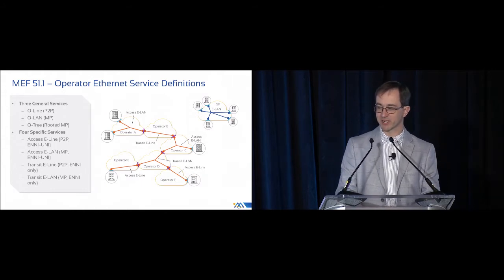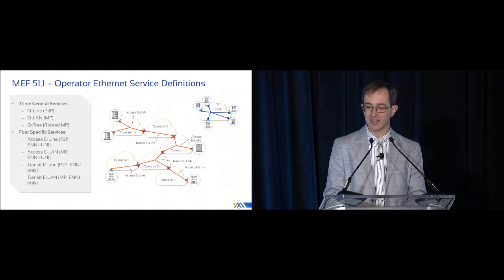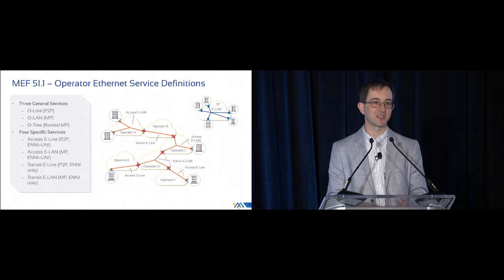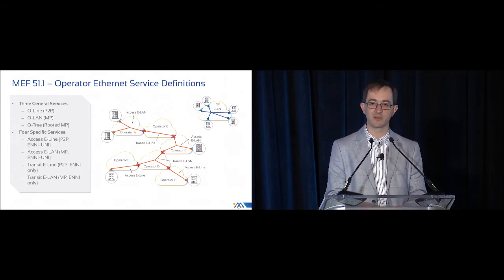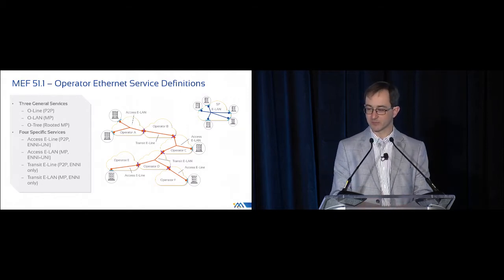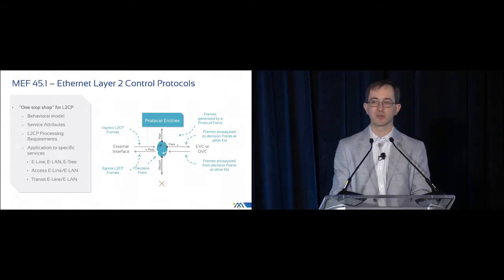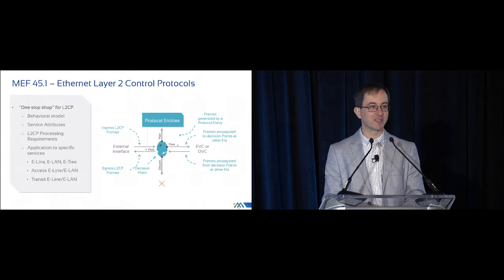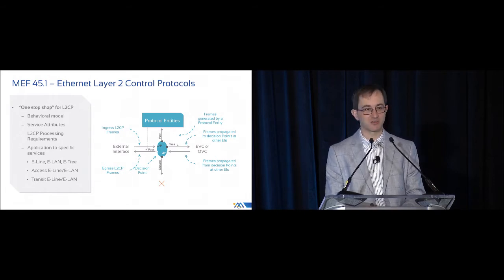The operator Ethernet service definition looks like a complicated figure, but essentially it's the same as the subscriber case. There are three types — O-line, O-lan, and O-tree — and four specific ones: access E-lan, access E-line connecting one or more UNIs to one or more ENIs, and then transit E-line and transit E-lan, which connect ENIs together providing transit between two operators. MEF 45.1 is the one-stop shop for layer-2 control protocols — a topic that always causes confusion. Everything has been pulled together into one place with nice flowcharts showing processing requirements for all the different service types.